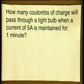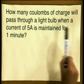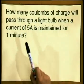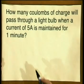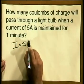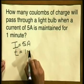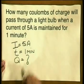Now let's practice using our equation q is equal to i times t. The question reads: how many coulombs of charge will pass through a lightbulb when a current of 5 amperes is maintained for one minute? First of all, I must organize the information. The current is equal to 5 amperes, the time is equal to 1 minute, and q, the charge, is what we are looking for.